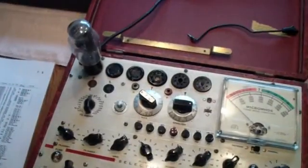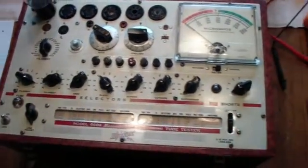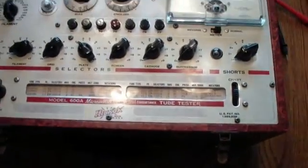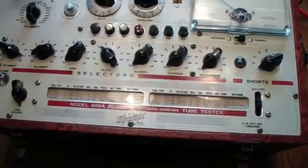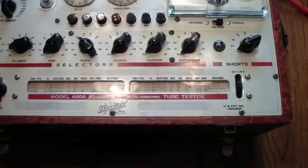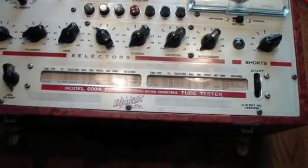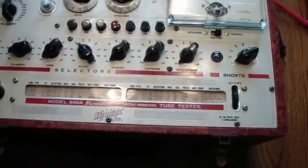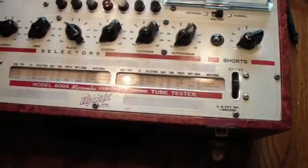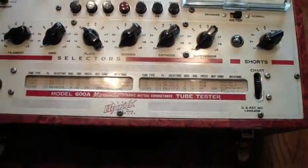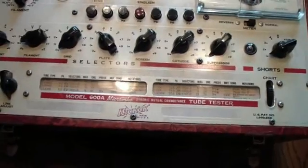Okay, we got it in the right socket, all set up. By the way, the reason I don't use the roll chart is they get kind of old and the paper gets brittle with age. So on these old tube testers, if you want to preserve the roll chart, it's better to get a printout of all the settings to use and just leave the roll chart in one position so you don't tear the paper or mess up the mechanism.